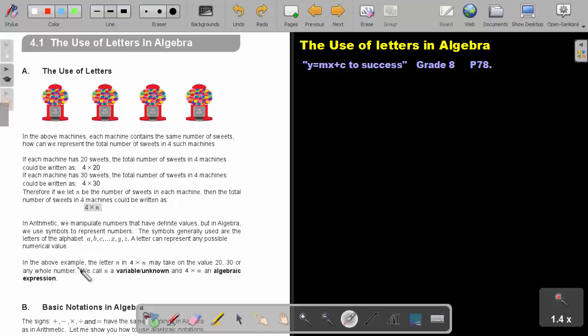In the above example, the letter n in 4 multiply n might take on the value of 20, 30, or any whole number. We call n a variable or unknown and 4 multiply n an algebraic expression.